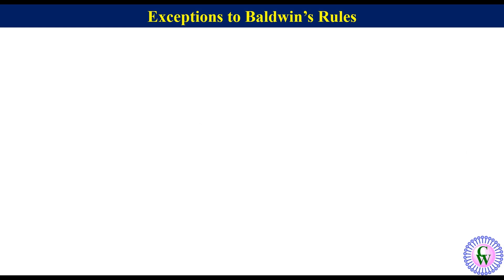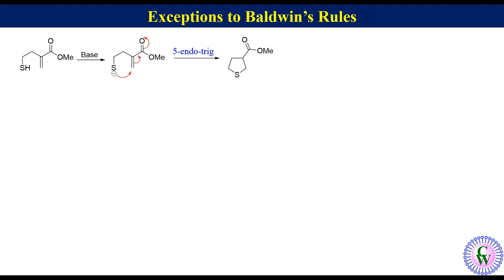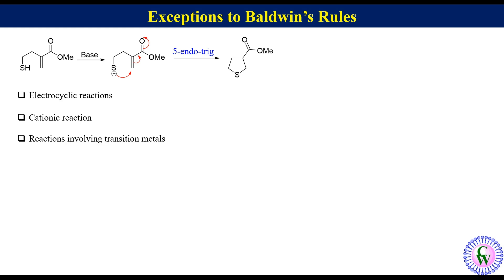Reactions in which second-row elements are included inside the ring also don't obey Baldwin's Rule. For example, a sulfur-containing compound treated with base produces a sulfide ion which undergoes 5-endotrig cyclization to produce the cyclic product. The amine analog of the same substrate did not undergo 5-endotrig cyclization, but this substrate does because the C–S bond is long and the empty 3d orbitals of sulfur may play a role by providing an initial interaction with the C=C pi orbital. Other reactions which don't obey Baldwin's Rules include electrocyclic reactions, cationic reactions, and reactions involving transition metals.